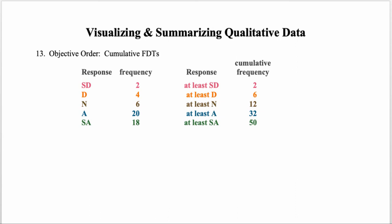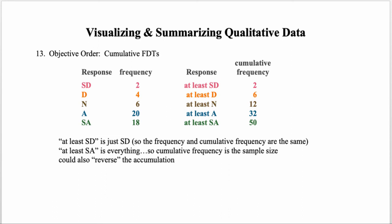To calculate cumulative frequency: to find all people who responded 'at least disagree,' we add 2 (strongly disagree) plus 4 (disagree) to get 6. To find all who responded 'at least agree,' we add 2 + 4 + 6 + 20 = 32. The first category — 'at least strongly disagree' — equals just the strongly disagree count of 2, while 'at least strongly agree' gives a total of 50, which is the entire sample.